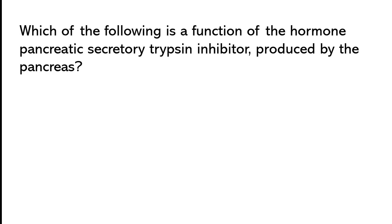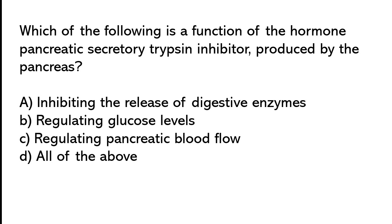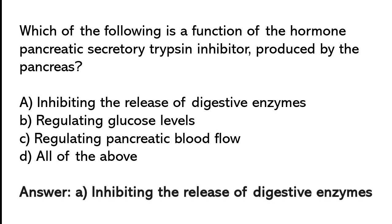Which of the following is the function of pancreatic secretory trypsin inhibitor produced by the pancreas? Inhibiting the release of digestive enzymes, regulating glucose levels, regulating pancreatic blood flow, or all of the above. The correct answer is option A — inhibiting the release of digestive enzymes.